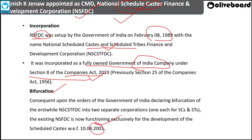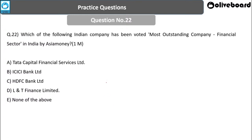We are done with Part Two of November month current affairs and will complete the remaining topics in Part Three. We'll also be coming up with a quick revision series for general knowledge and current affairs to help with your upcoming exam. One more question: which Indian company was voted as the most outstanding company in the financial sector in India by Asia Money?